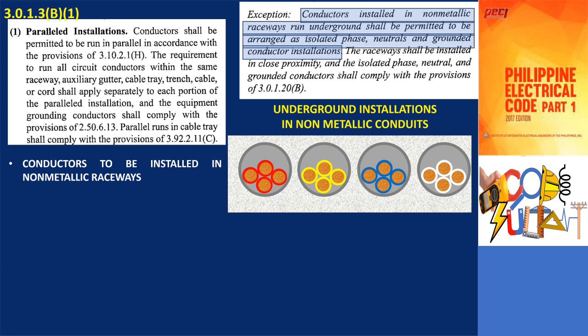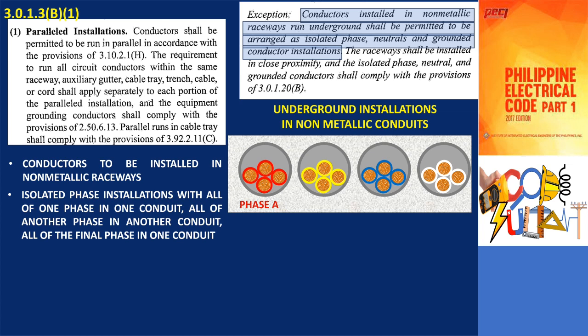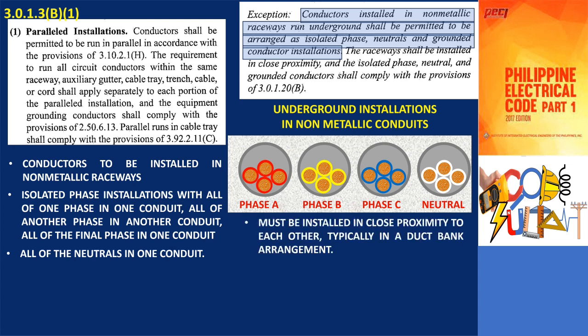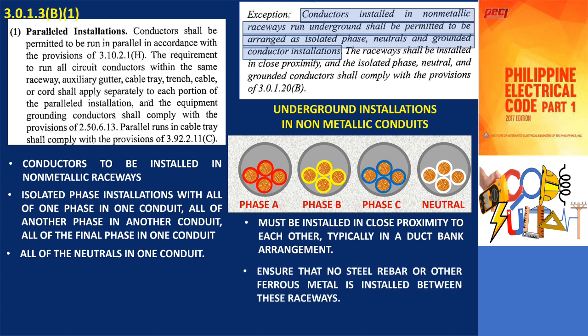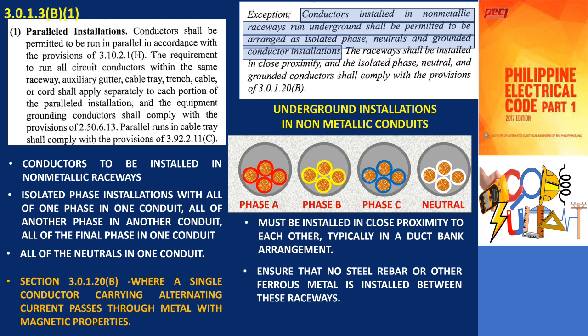In this exception, the conductors can be arranged as isolated phase installations, with all conductors of one phase contained within one conduit, all conductors of another phase in a separate conduit, and all conductors of the final phase in its own conduit. The neutrals for these phases are then placed within the final conduit. It is important to note that these raceways must be installed in close proximity to each other, typically in a duct bank arrangement. However, caution must be exercised to ensure that no steel rebar or other ferrous metal is installed between these raceways. Compliance with Section 3.0.1.20B is necessary when connecting these raceways into a ferrous metal enclosure.